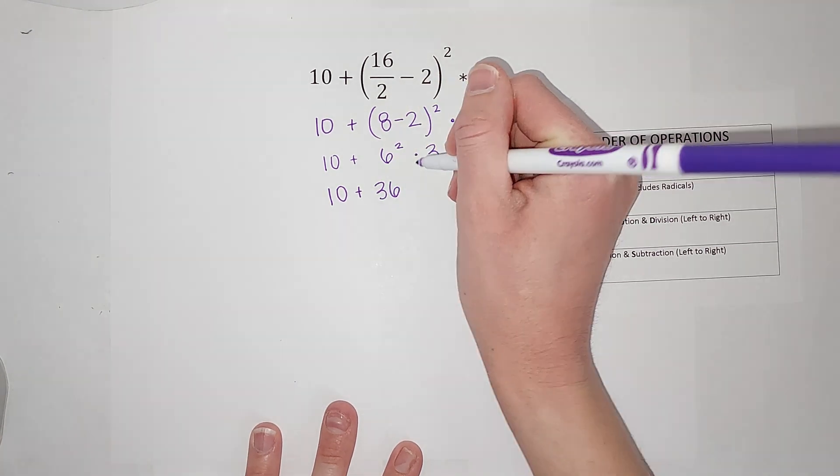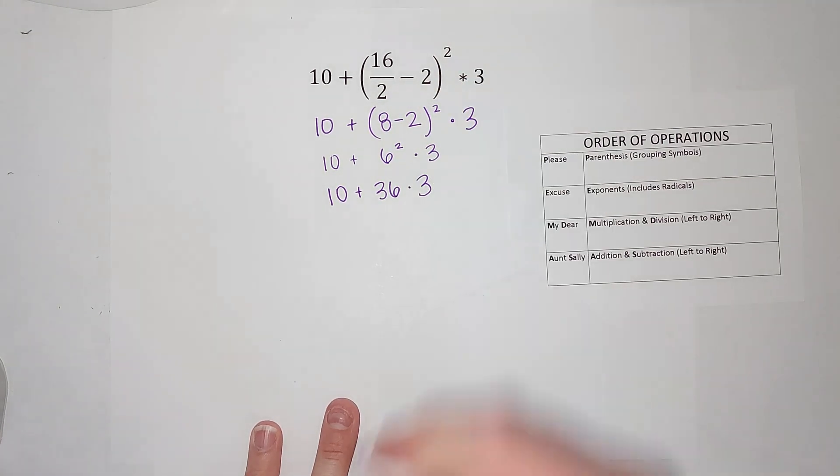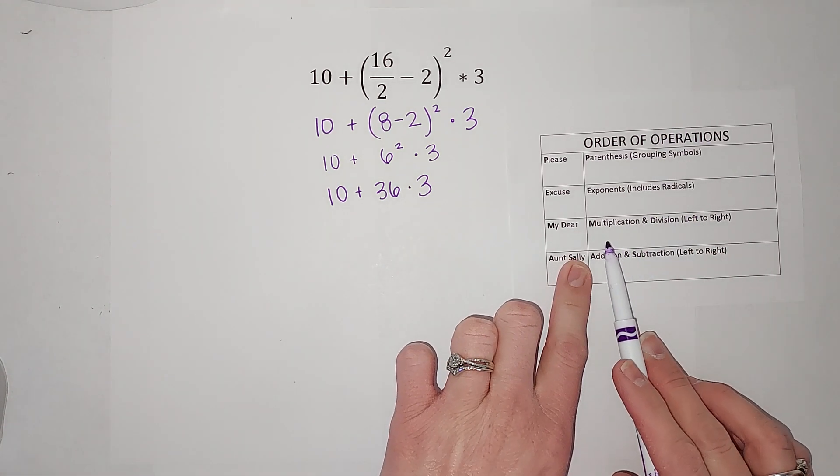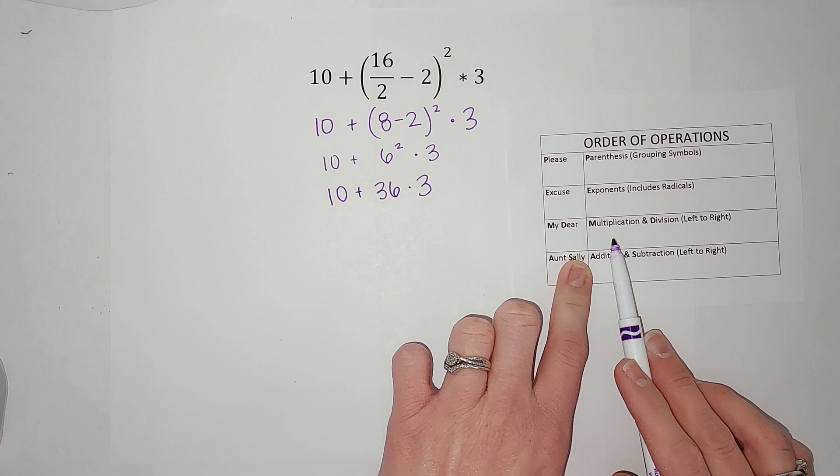Times 3 next. I've got addition and multiplication. If we follow our list, multiplication comes before addition.